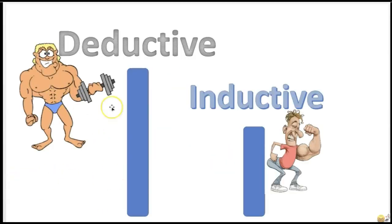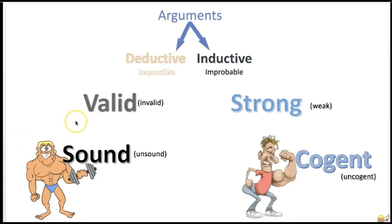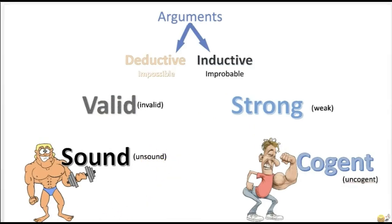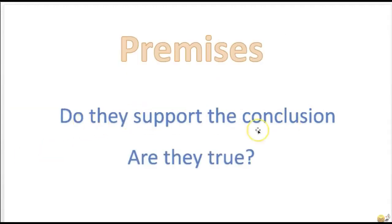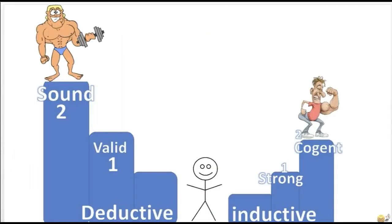Another note: the strongest type of argument you want is a deductive argument. If the premises are true, it would be impossible for the conclusion to be false. Inductive arguments are also strong, just not as strong as deductive arguments. So if you want the best argument, for deductive you work up to a sound argument, and for inductive you work up to a cogent argument. These are steps up the ladder to the best arguments.